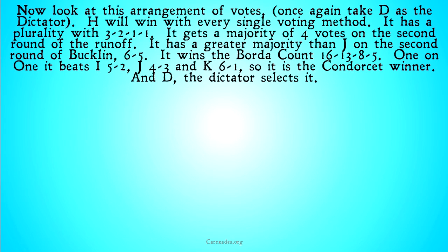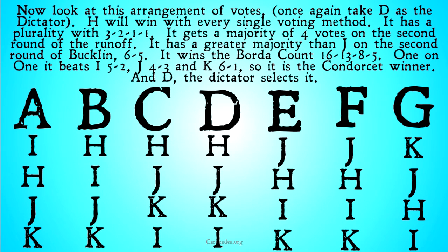This is the voting profile we're going to be looking at. With D as the dictator, H will win in every single voting method. It has a plurality with three to two to one to one — H is winning. It has a majority of votes on the second round of the runoff. It has a greater majority than J on the second round of Buckland, six to five. It wins the Borda count 16–13–8–5, and one-on-one it beats I five to two, J four to three, and K six to one — so it is the Condorcet winner, and D the dictator selects it.